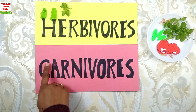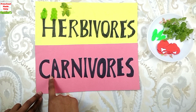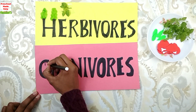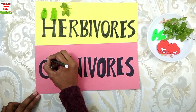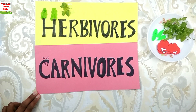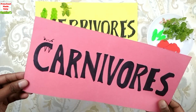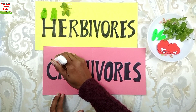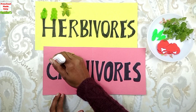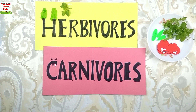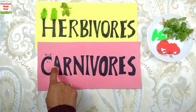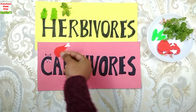Now for carnivores — make two sharp teeth and angry eyes. You can use whitener or color to make the teeth visible. Tell the kids this C has sharp teeth, so the animals belonging to this category eat only meat. They eat flesh, and the creatures that eat flesh come to this category. Place one piece of meat on the card to remember.